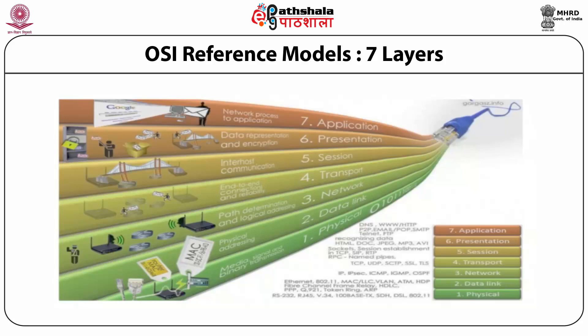TCP/IP becomes the backbone communication protocol of the internet. Whatever we see on the internet today is TCP/IP based. The data link layer includes MAC, LLC, VLAN, ATM, fiber channels, frame relay, HDLC, token ring, ARP, Ethernet, Wi-Fi 802.11, WiMAX 802.16. And the physical layer includes standards like the RJ45 connector, CAT cable, 100Base-TX, RS232 serial connector — all these standards are mentioned in the physical layer.